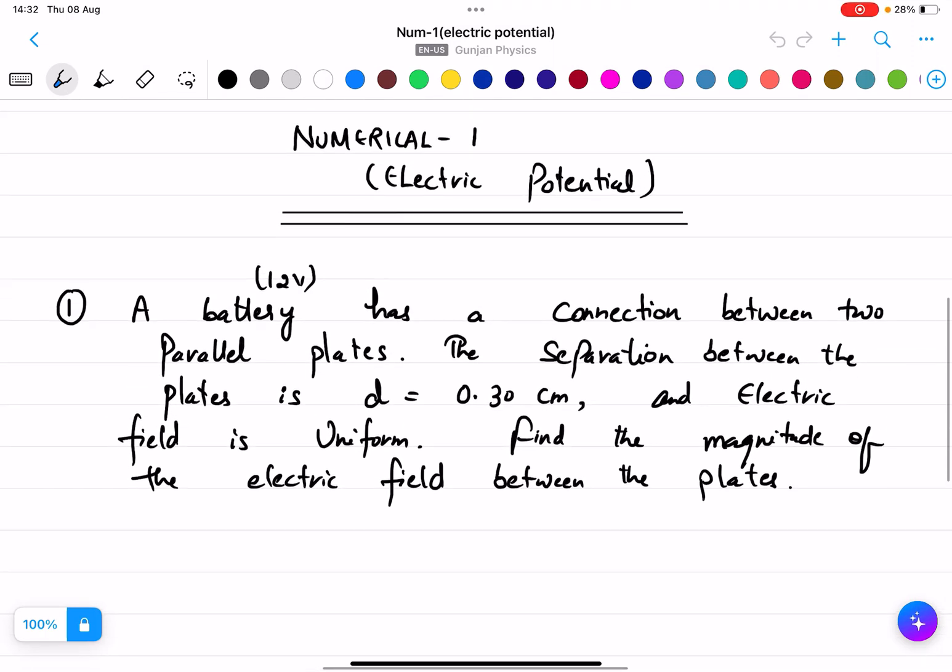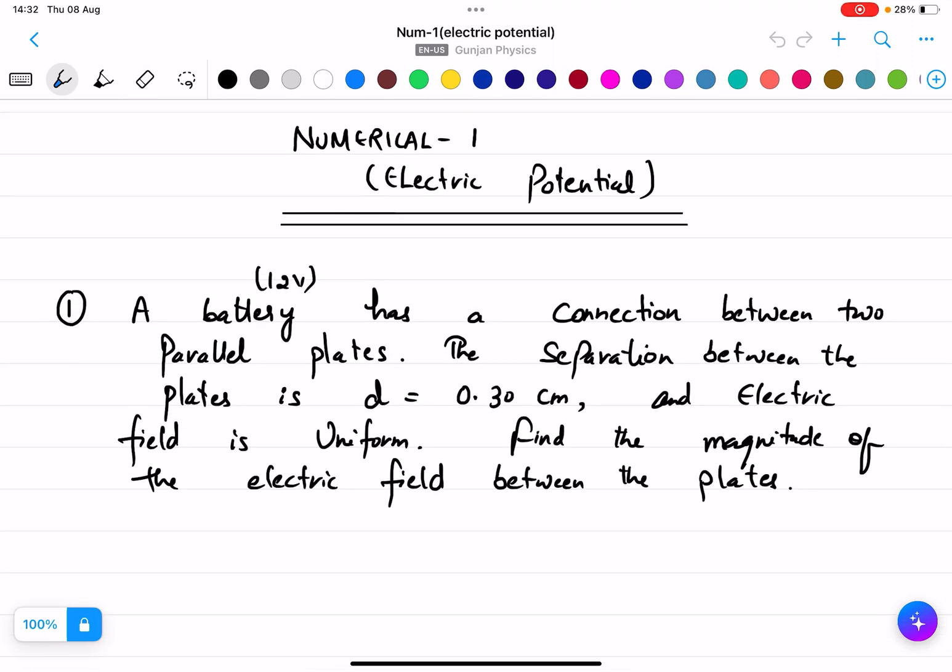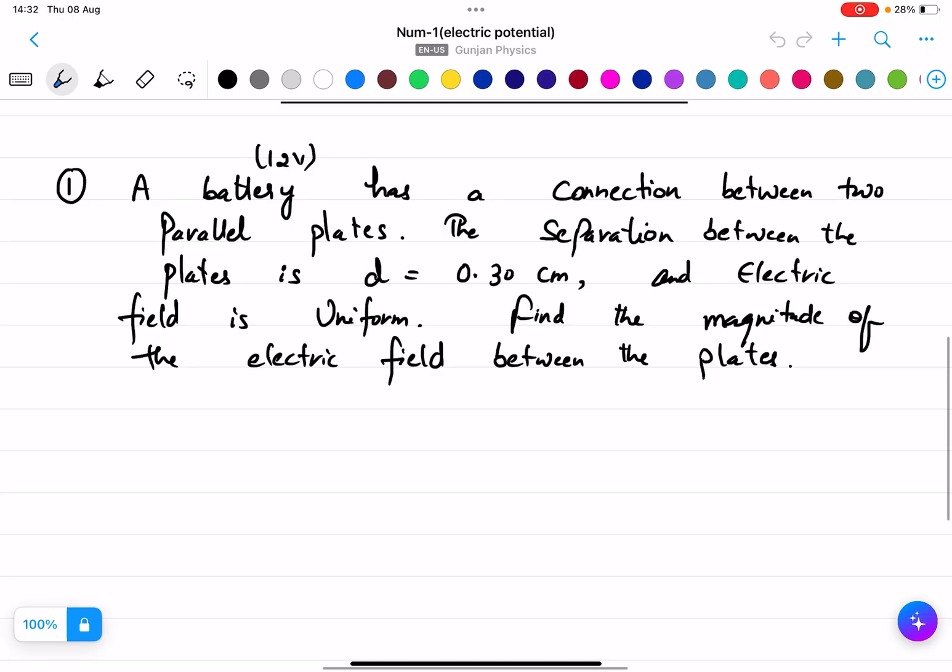Okay, so now we will do the first numerical based on electric potential. The numerical says a battery has a connection between two parallel plates. The separation between the plates is d = 0.30 centimeter and the electric field is uniform.